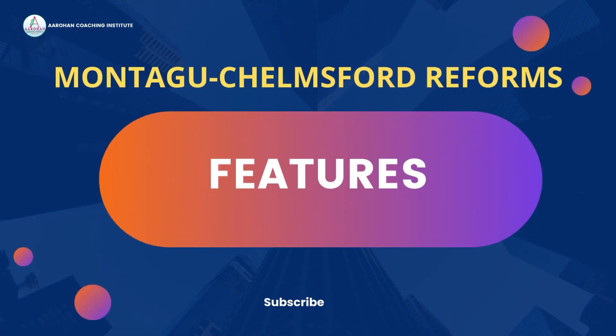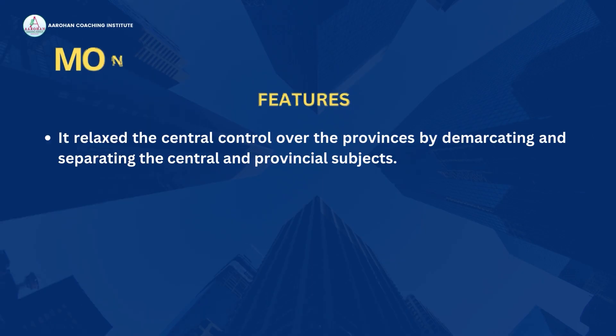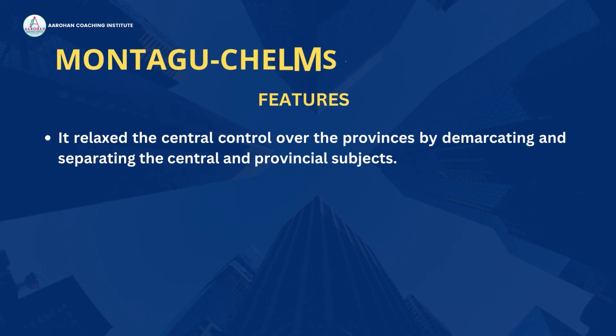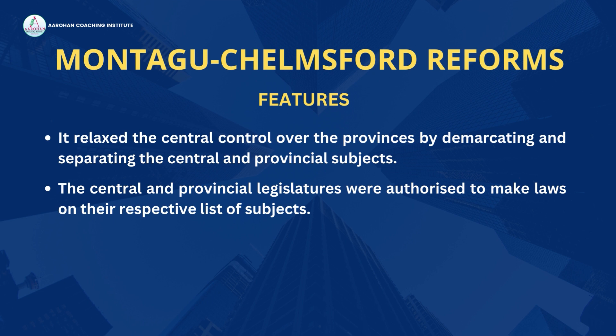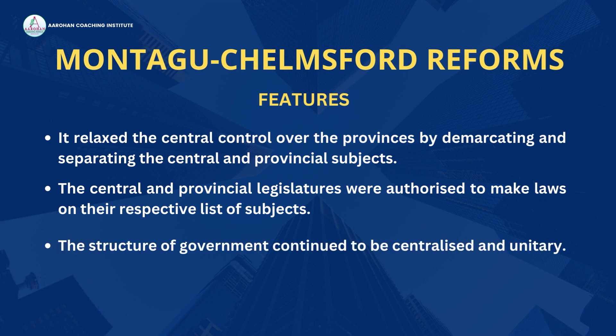Now let's discuss the features of this act. It relaxed the central control over the provinces by demarcating and separating the central and provincial subjects. The central and provincial legislatures were authorized to make laws on their respective list of subjects. However, the structure of government continued to be centralized and unitary.